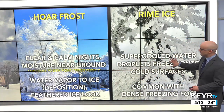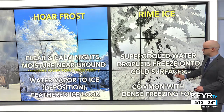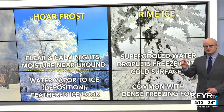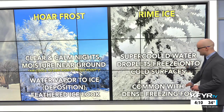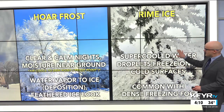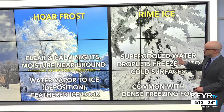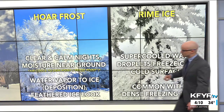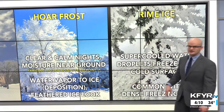Whereas with rime ice, we have supercooled water droplets that freeze onto a cold surface. Those supercooled water droplets are within fog — that's why we call it freezing fog — and that can be dense, creating a lot of rime ice. The rime ice can sometimes have this spiky appearance, and it all comes from the water going to solid state, whereas hoarfrost goes from gas — water vapor — to solid state.